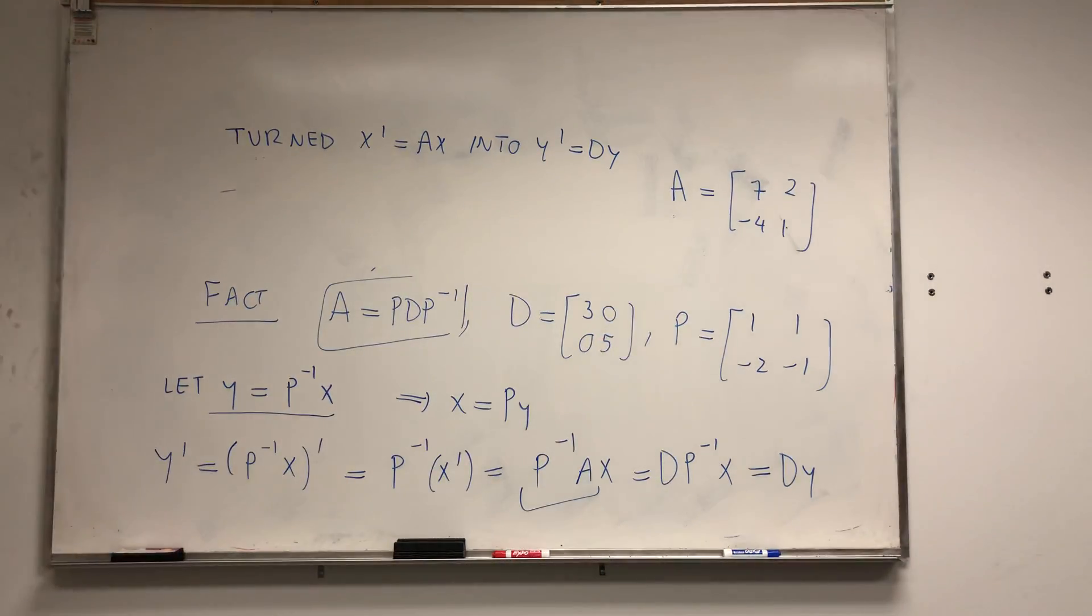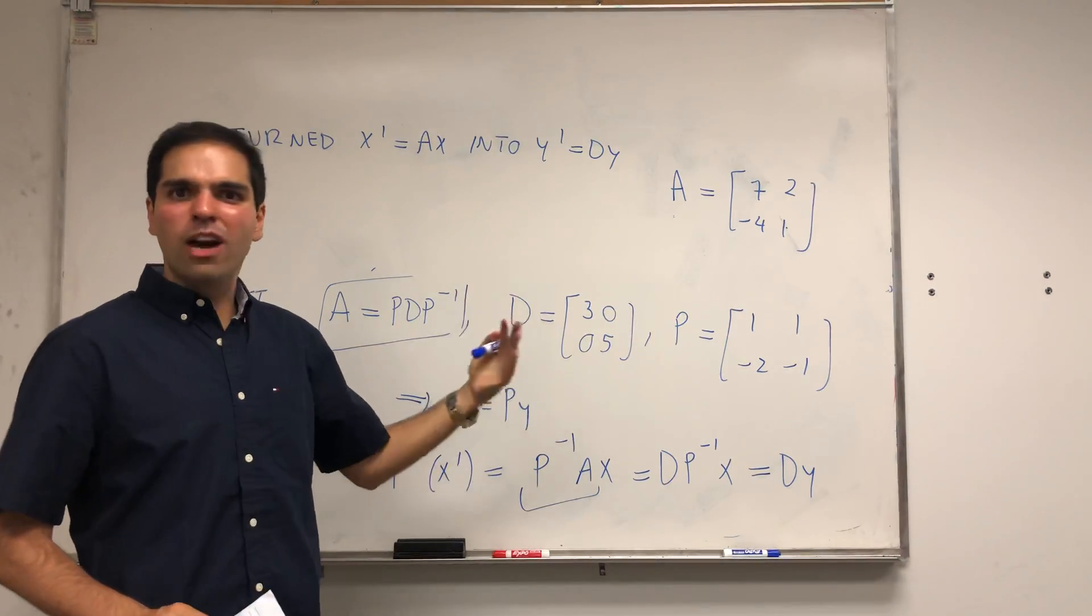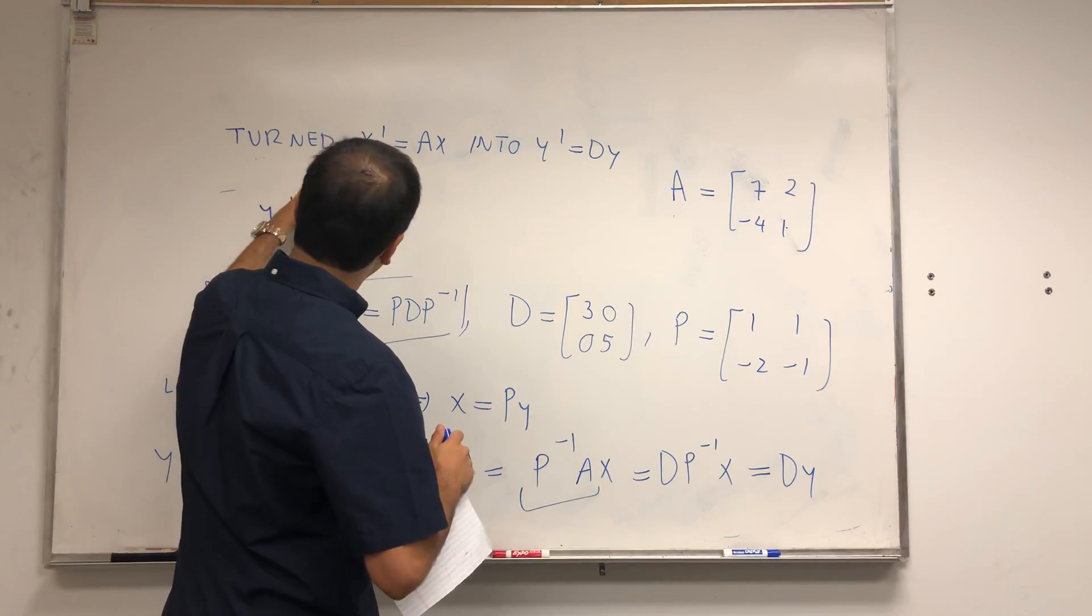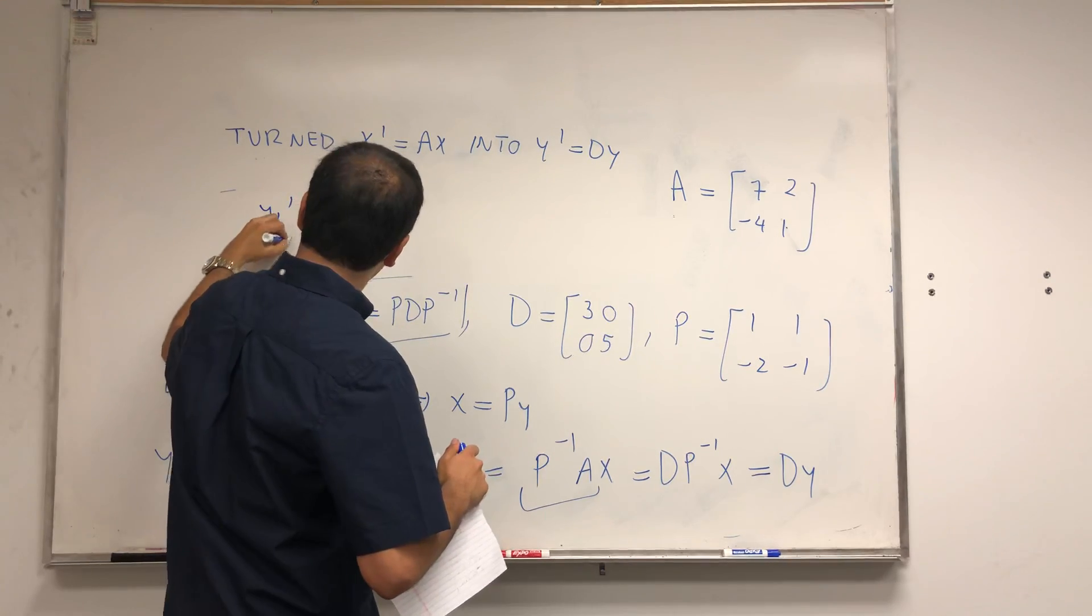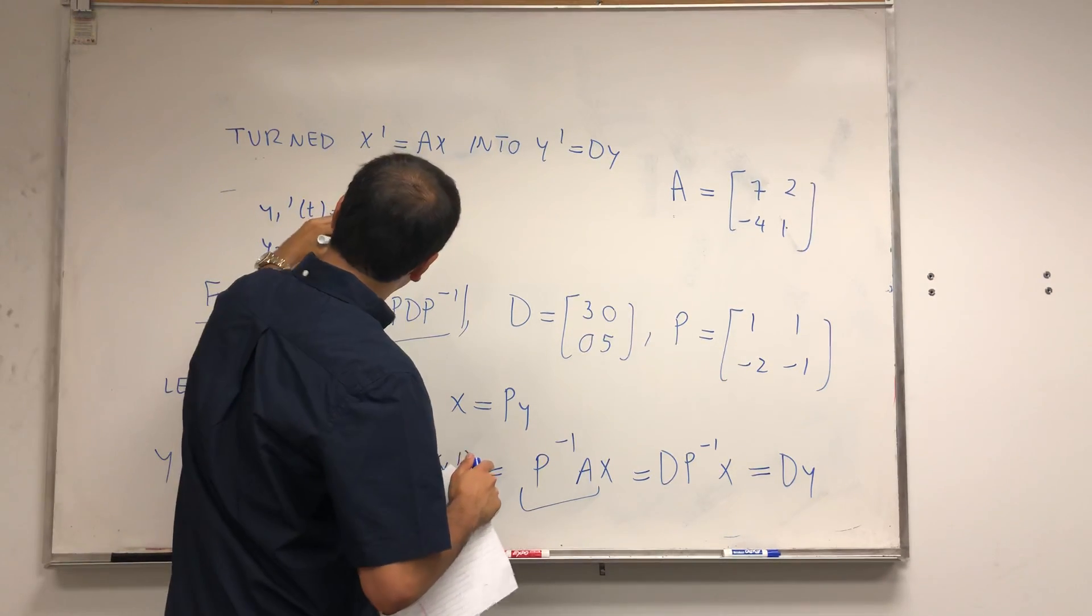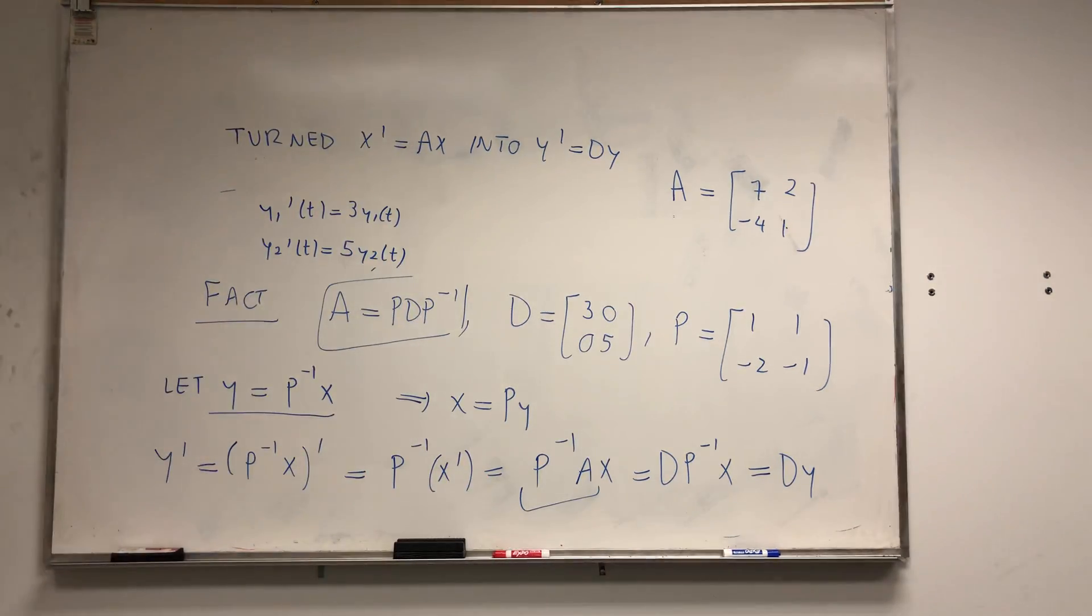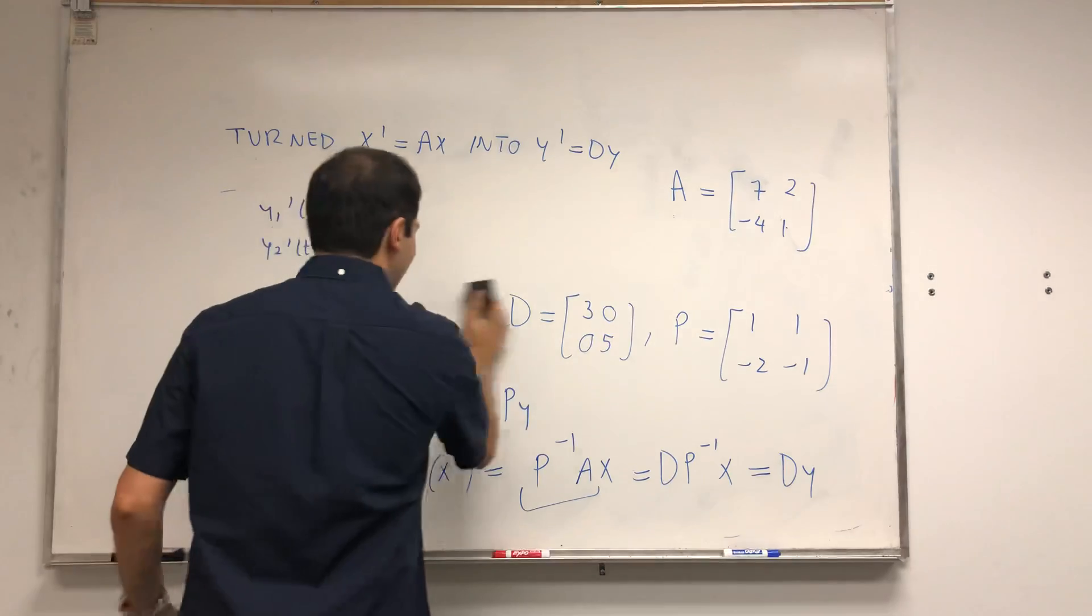We turned x prime equals Ax into y prime equals Dy, where D was this matrix. But this was precisely the example from before, where y1 prime equals 3y1 and y2 prime equals 5y2. But then we can actually solve this.